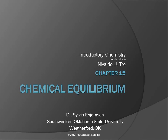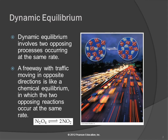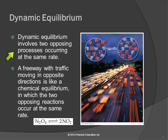Chapter 15. We're going to cover this whole chapter today: Chemical Equilibrium. Dynamic equilibrium is an important concept in chemistry, and what it involves is two opposing processes occurring at the same rate. These are two opposite things that are happening at the same time and at the same rate.